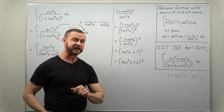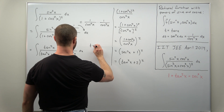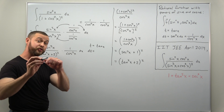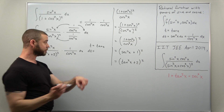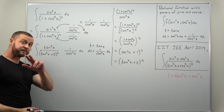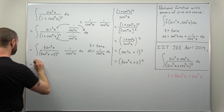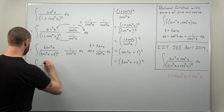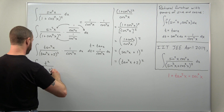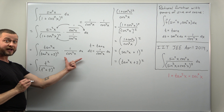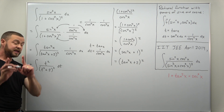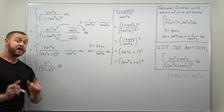Our substitution is t equals tangent of x. The differential dt comes from the derivative, which is secant squared — or one over cosine squared — times dx. Converting all the parts: we get t squared in the numerator, t squared plus two, all squared in the denominator, and one over cosine squared x dx converts to dt. At that point we have an integral of a basic rational function in terms of t.